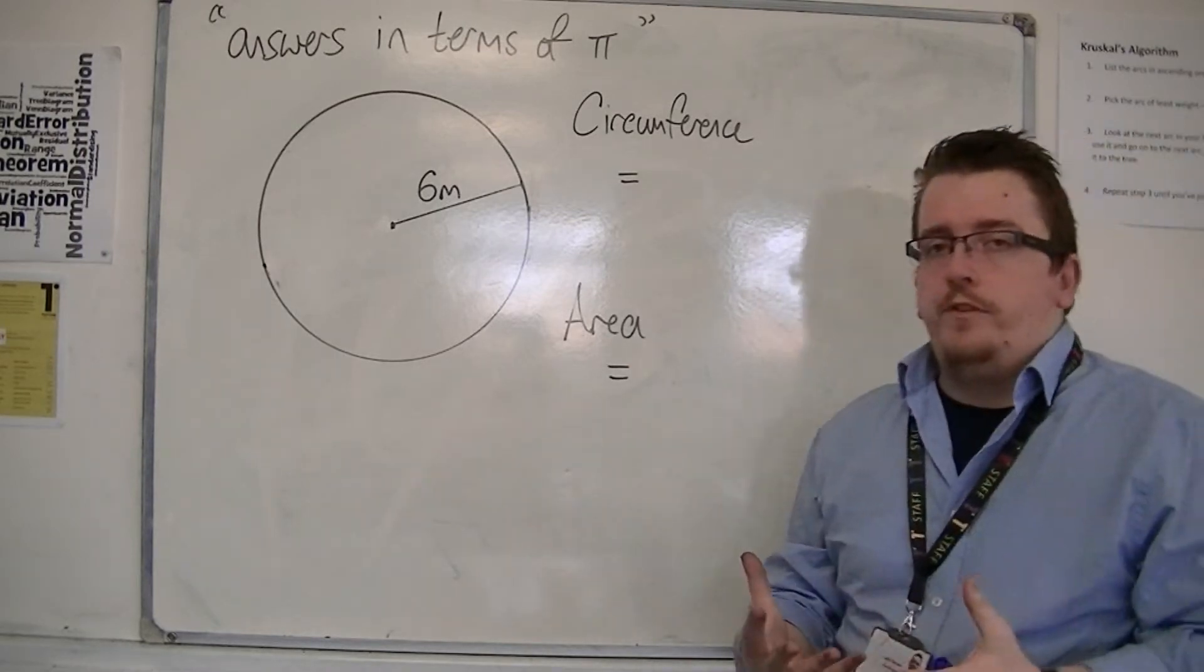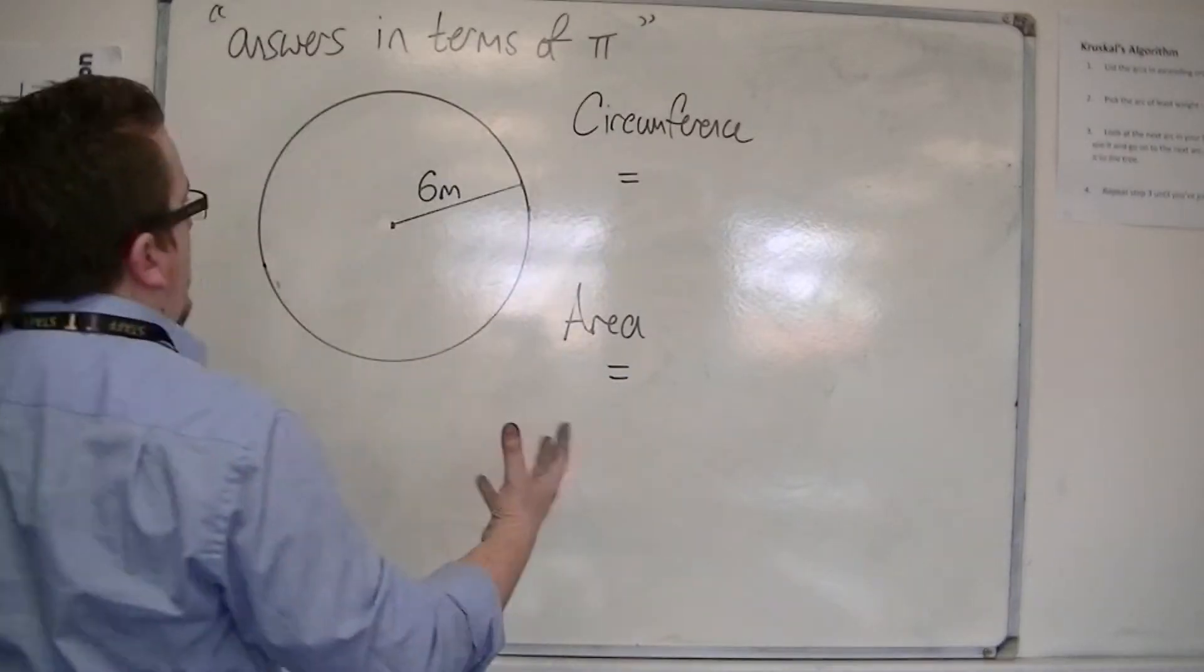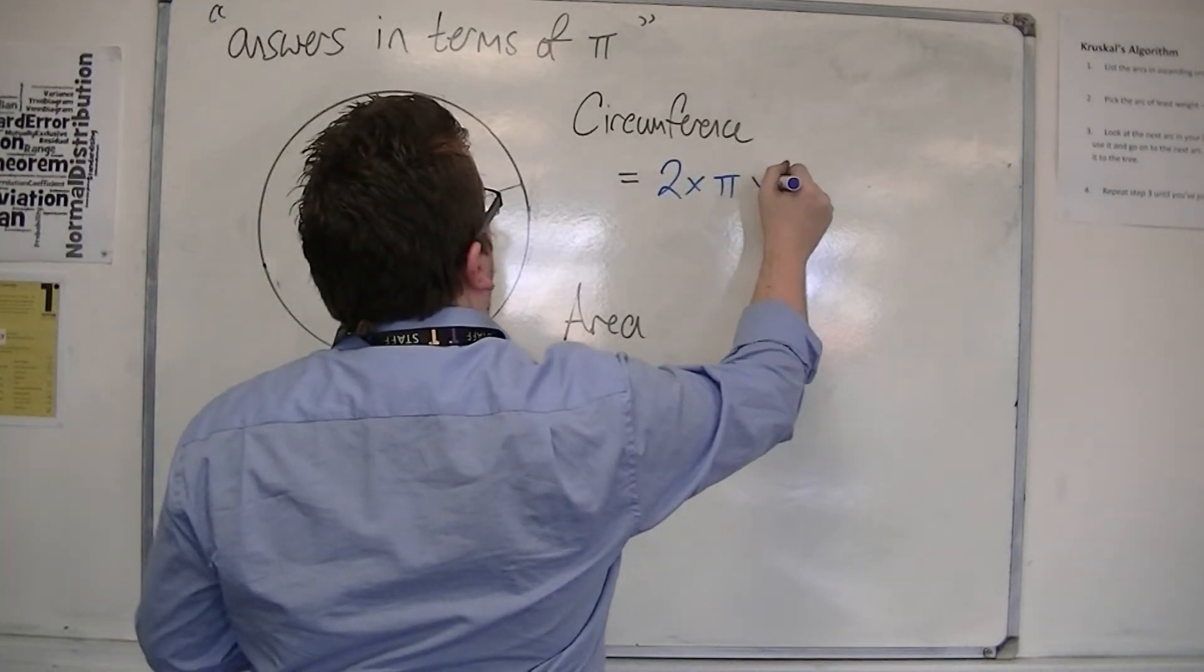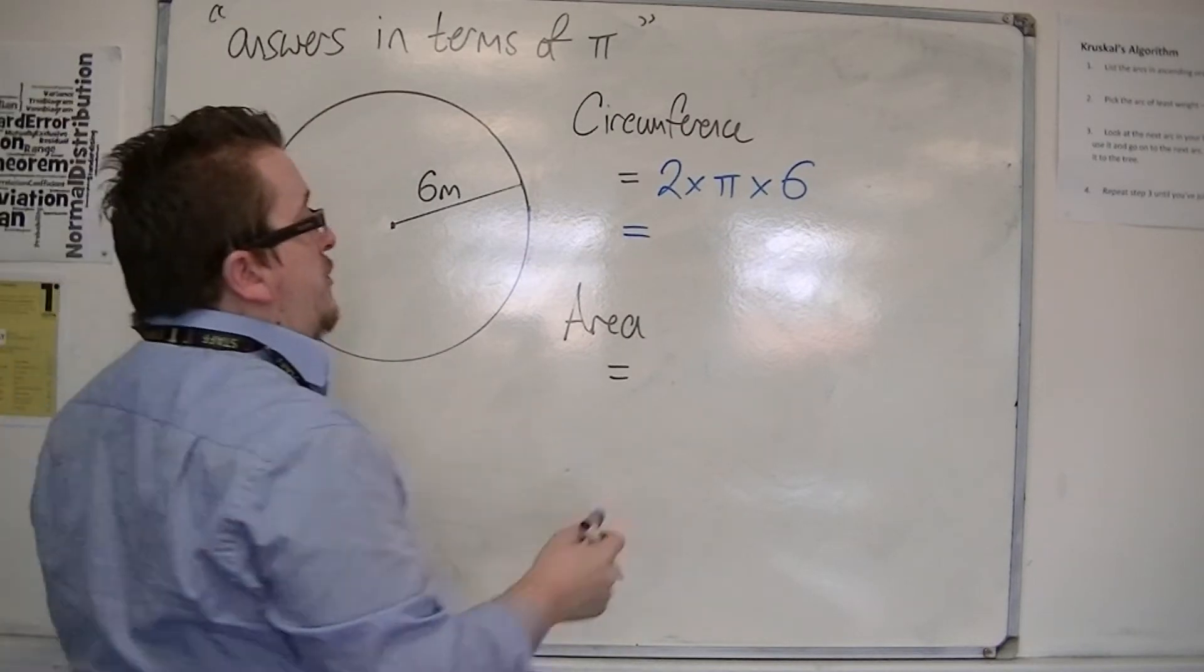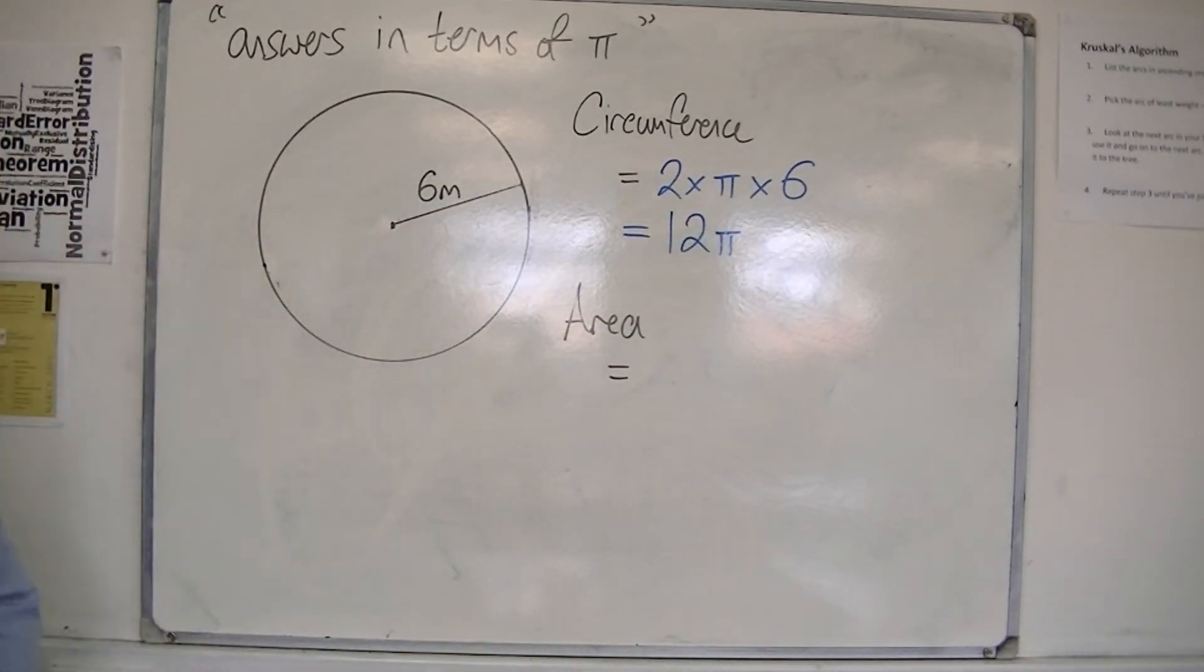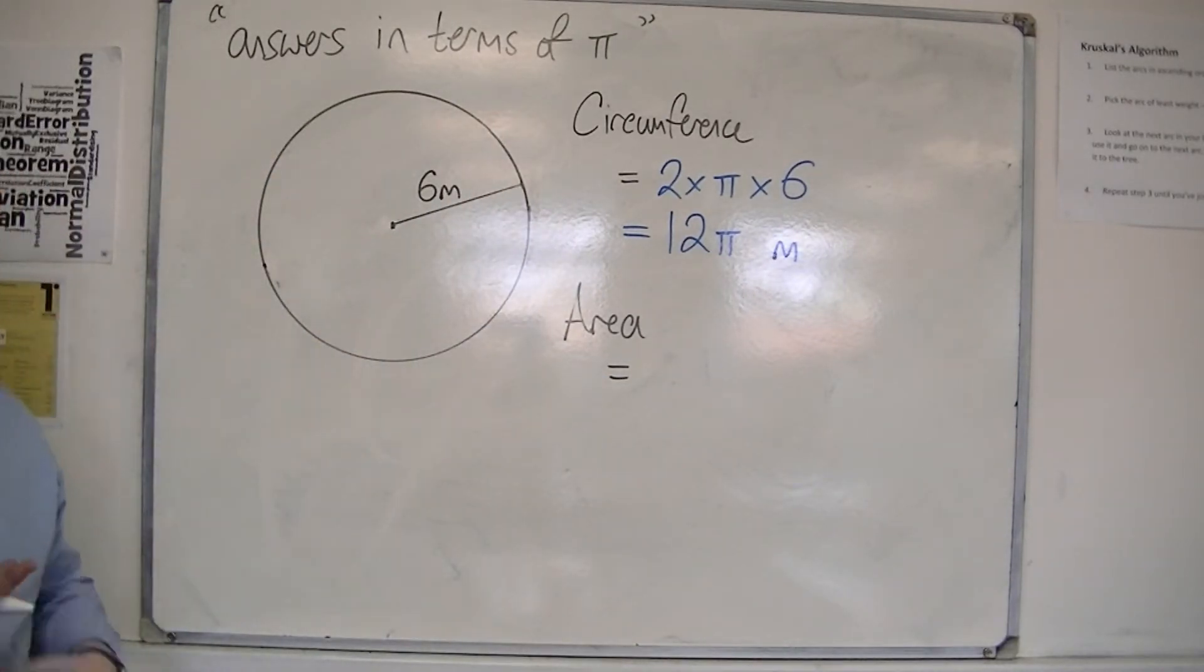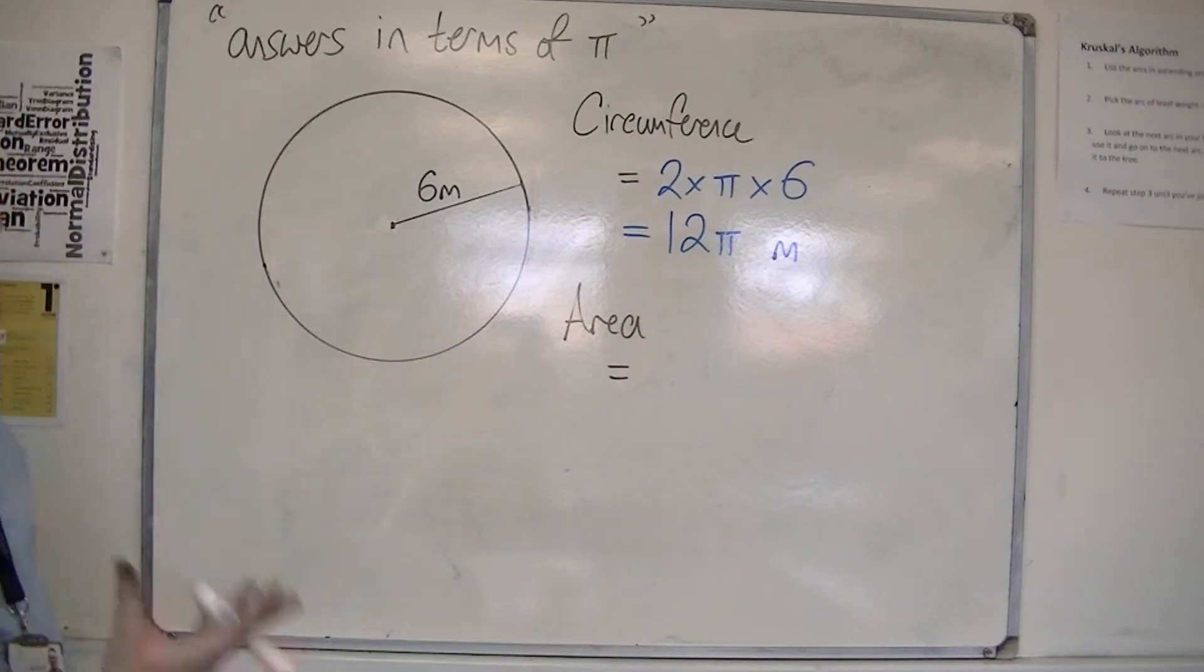The circumference we know is pi times d, or 2πr. Because I've been given the radius, I'm going to use 2πr. 2 times pi times 6, so 2 times pi times 6 is just 12π. 2 times 6 is 12, just leave the pi by itself. So it would be 12π meters. And that's what it means by leaving your answer in terms of pi. Your answer should still have pi in it. It's very simple.